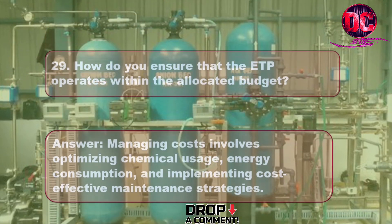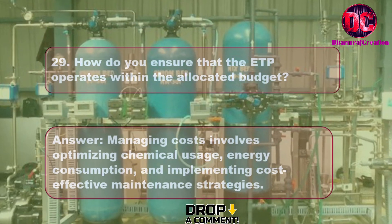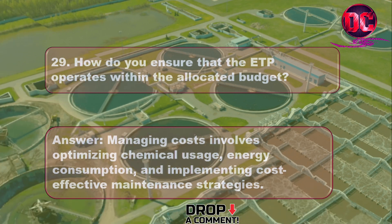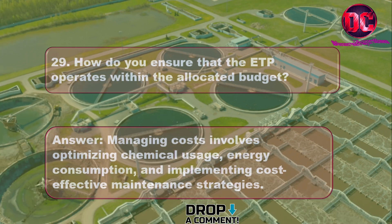29. How do you ensure that the ETP operates within the allocated budget? Answer: Managing costs involves optimizing chemical usage, energy consumption, and implementing cost-effective maintenance strategies.